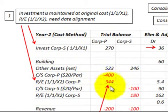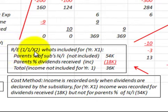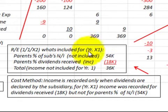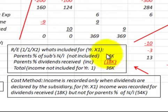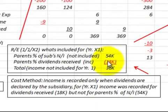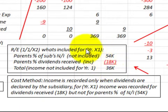Looking at our retained earnings — 344,000 for corporation P — that's at January 1st of year two (X2). Using the cost method, the parent's percent of the sub's net income for year one is not included, which was 54,000 dollars. The parent's dividends received from the sub were included for 18,000 dollars. The difference — total income not included for year one — is 36,000 dollars, so we need to make an adjustment for that amount.